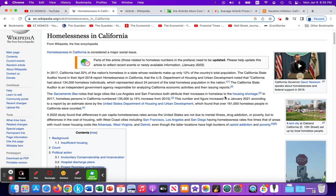This, in part, is due to a housing shortage where the quantity of demand is greater than the quantity supplied of affordable housing. In 2017, homeless persons in California numbered 135,000, which was a 15% increase from 2015. This highlights that this problem is not being resolved, it's just getting worse over time.